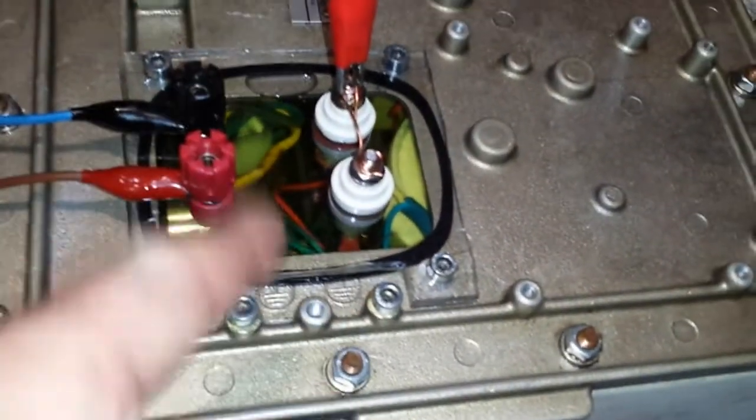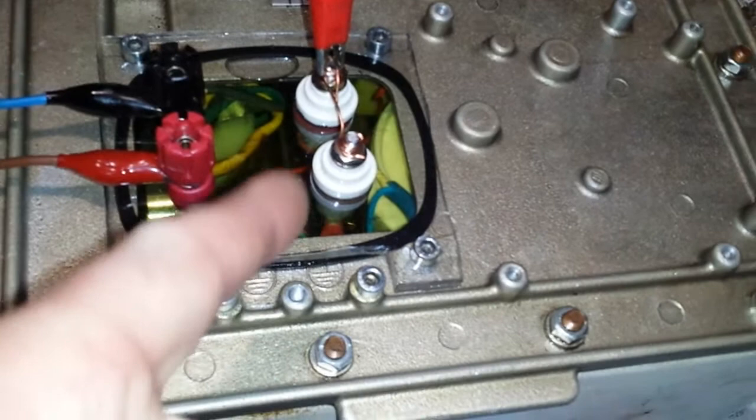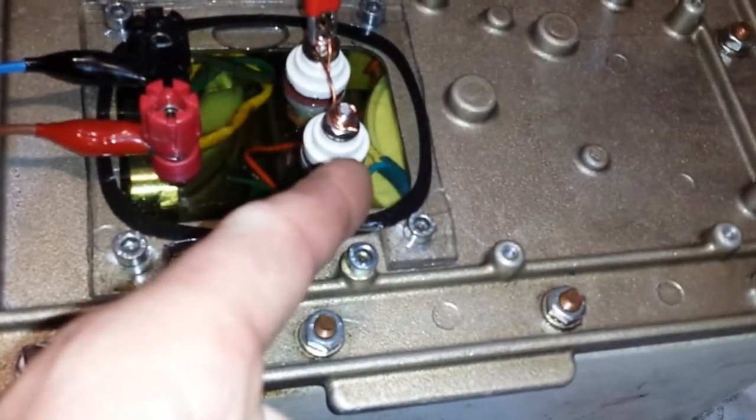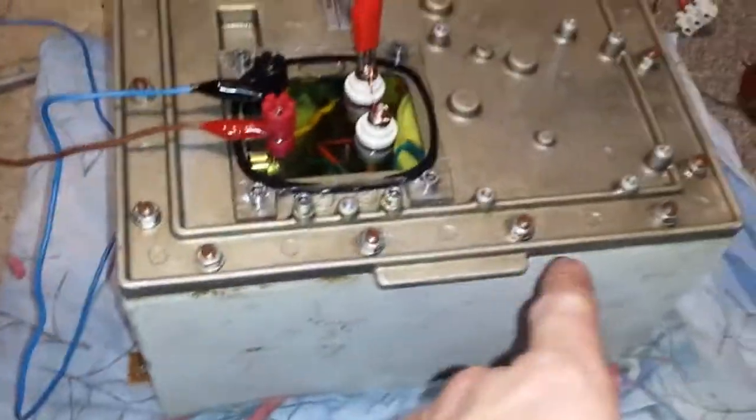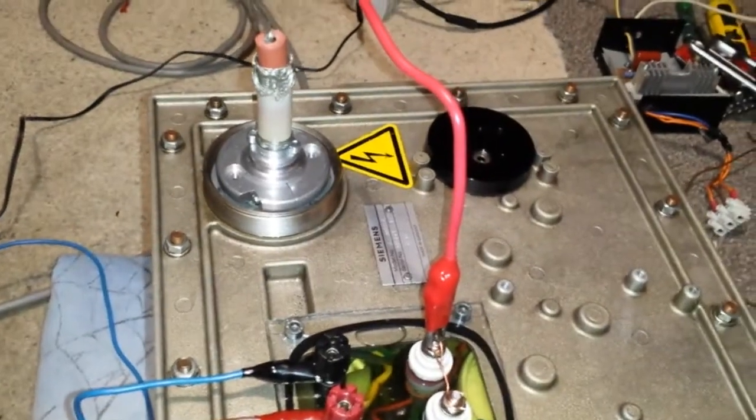But it does work pretty well. You actually get arcs jumping. I'm not going to touch that because there's going to be a charge still left in that. You get arcs jumping from that because of that bit of a wire just there. It jumps to that grounding point to the base of this. I should really ground this to earth, but it's just for a test anyway, what I'm showing you.